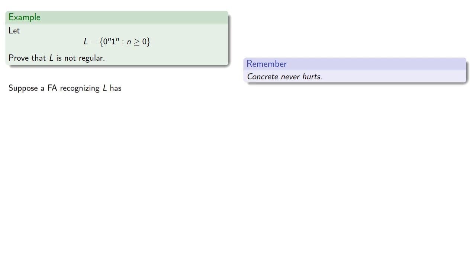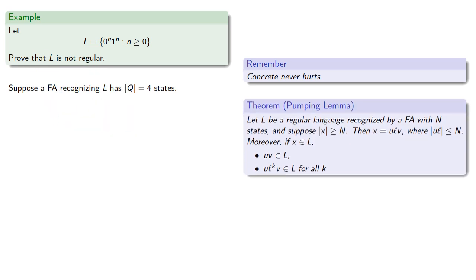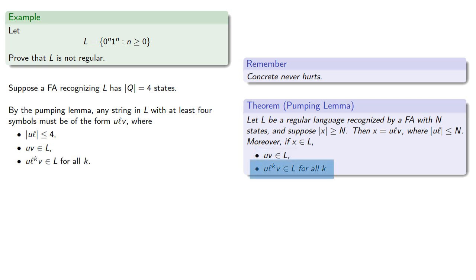So the first part of the string must be of the form ulv, where the first part of the string has length less than or equal to 4, dropping out the middle gives us something in L, and we can repeat the middle as many times as we want and get something else in L.